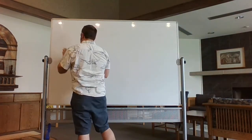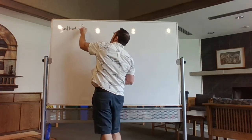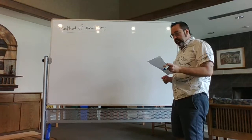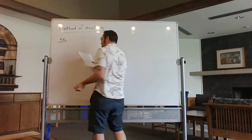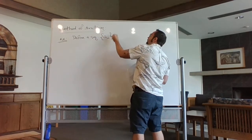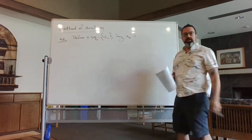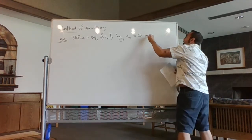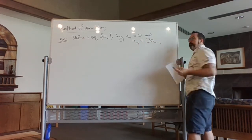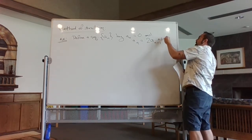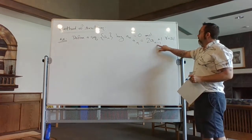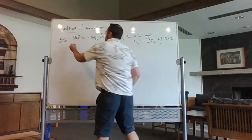This is the method of iteration applied to recurrence relations and recursively defined sequences. Let's take this example: define a sequence a sub n by setting a_0 equal to zero, and for n greater than or equal to one, each successive term a sub n is two times the previous term plus one — that is, two times a sub n-minus-one plus one. So after the starting point of zero, we double the previous term and add one. The method of iteration is really simple — we just go through and apply the formula.